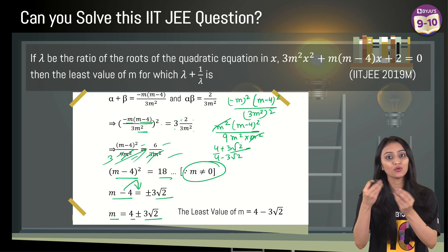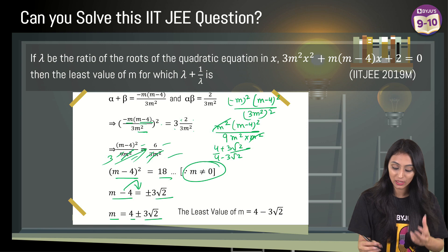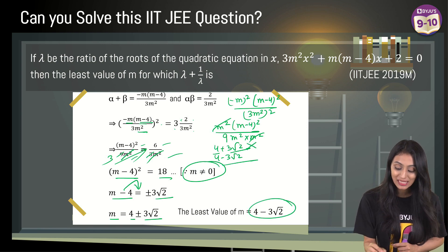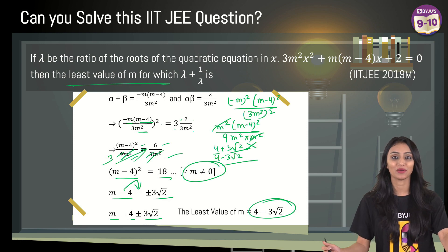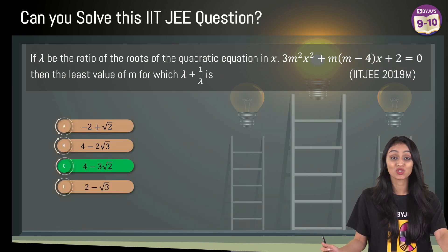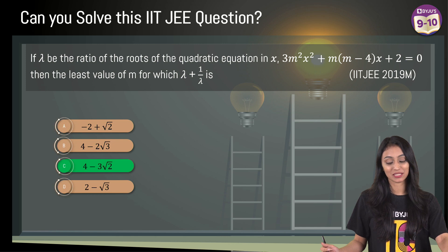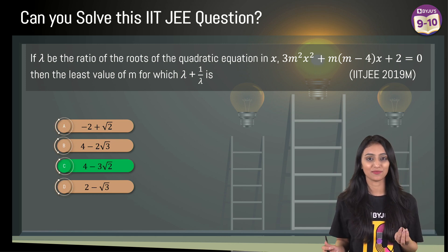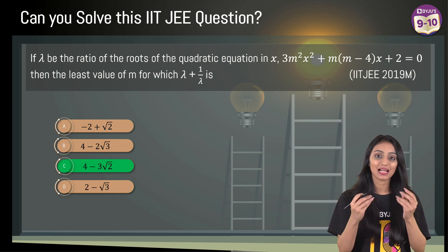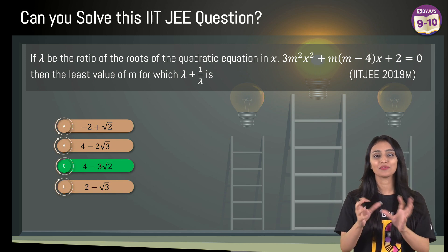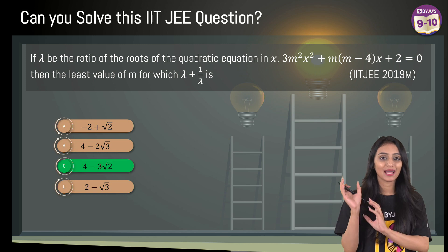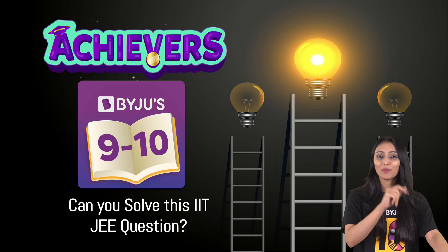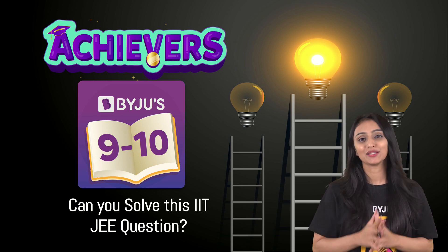Since we are adding something to 4 in the first case, that gives a bigger value, so we do not consider it. The least value of m is 4 − 3√2, which corresponds to option C. We did not use anything new here — just basic polynomial concepts, algebraic identities, and a little calculation to solve an IIT JEE question. Do leave a comment on how you liked this question!